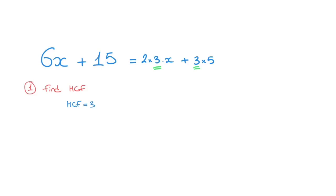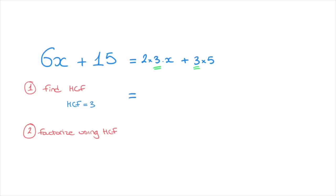And that's our first step done. Now that we have the highest common factor, we move on to step 2. In step 2, we're going to write this expression in its fully factored form using the highest common factor — I'll just write 'factorize using HCF'. We can state that this expression equals to the highest common factor, which was 3, times in parentheses all of the factors we didn't underline in the first term — those would be 2 and x — so we write 2x.